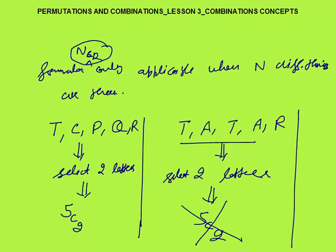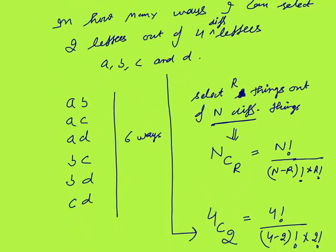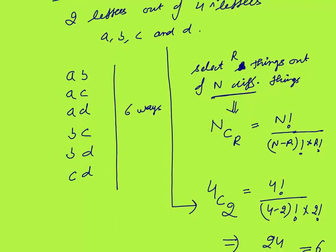So out of N different things, you need to select R things, and the formula is NCR. A very important point: R should be less than or equal to N, and R must be greater than 0. R will definitely be a positive integer — greater than 0 and less than or equal to N.